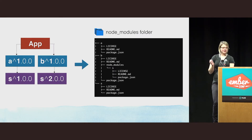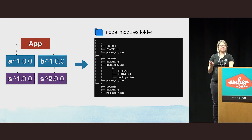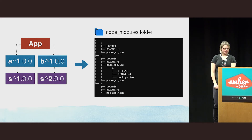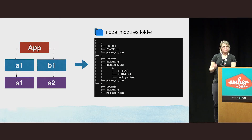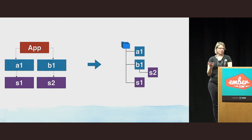This is the resulting node_modules structure on the right-hand side. You can see the nested structure: A and B are top-level dependencies, but NPM and Yarn try to flatten dependencies as much as possible. One of the S child dependencies gets installed at the top level; the other — because it's the same name but a different version — gets installed under its parent B.